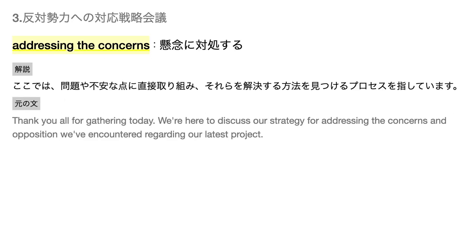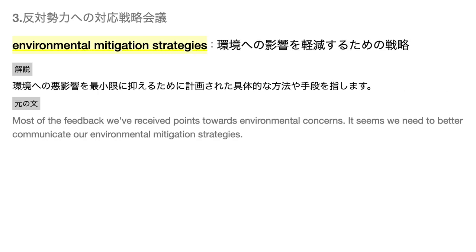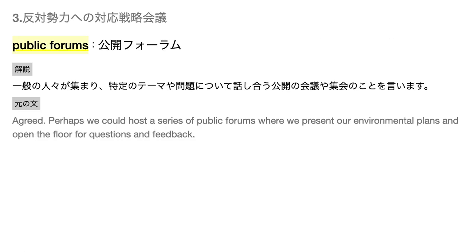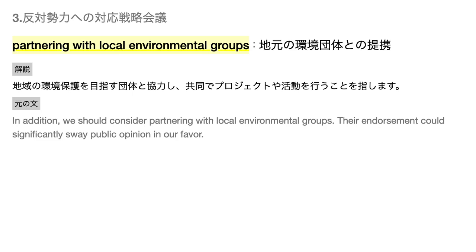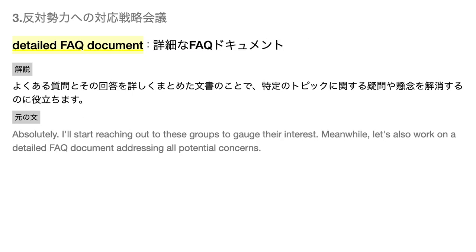Addressing the concerns — ここでは、問題や不安な点に直接取り組み、それらを解決する方法を見つけるプロセスを指しています。Environmental mitigation strategies — 環境への悪影響を最小限に抑えるために計画された具体的な方法や手段を指します。Public forums — 一般の人々が集まり、特定のテーマや問題について話し合う公開の会議や集会のことを言います。Partnering with local environmental groups — 地域の環境保護を目指す団体と協力し、共同でプロジェクトや活動を行うことを指します。Detailed FAQ document — よくある質問とその回答を詳しくまとめた文書のことで、特定のトピックに関する疑問や懸念を解消するのに役立ちます。